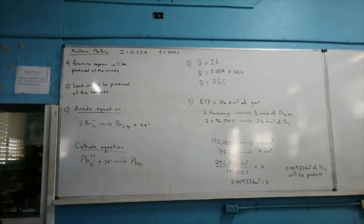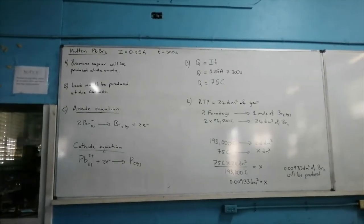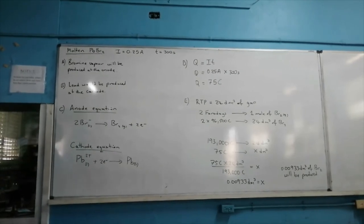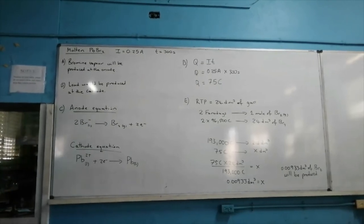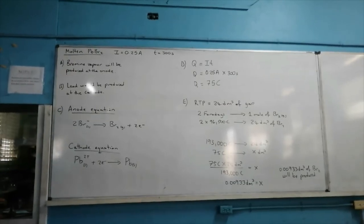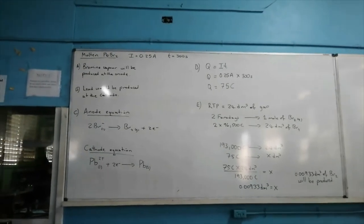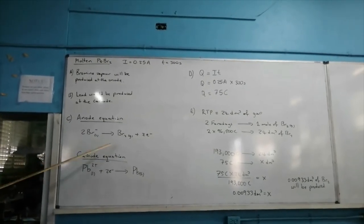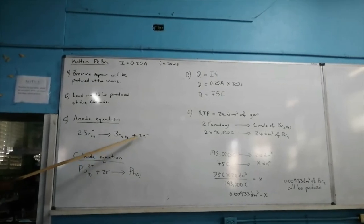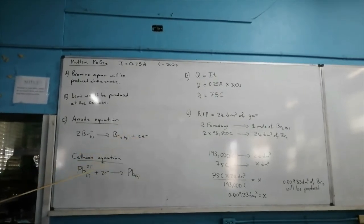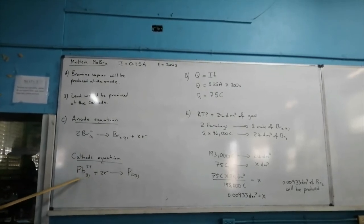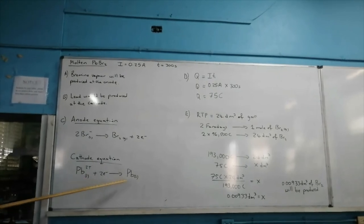Molten lead(II) bromide is being electrolyzed for 300 seconds using a current of 0.25 amperes. Because the salt is molten, only lead ions and bromide ions are present. At the anode, bromine vapor is produced; at the cathode, lead metal is produced. The anode equation: 2 moles of bromide ions form 1 mole of bromine gas and give up 2 moles of electrons. The cathode equation: 2 moles of electrons are added to 1 mole of Pb²⁺ ions to form lead metal.